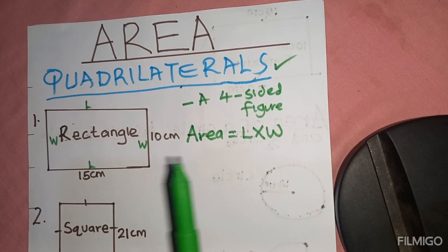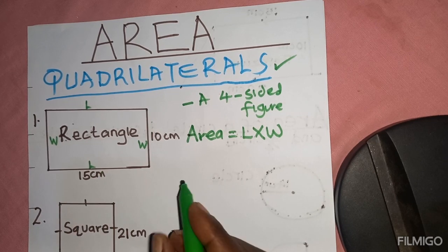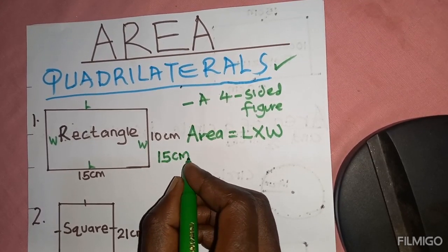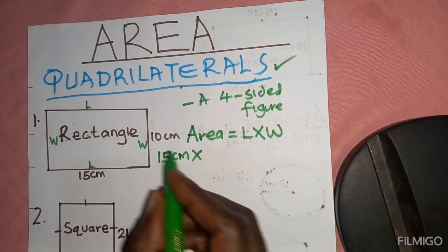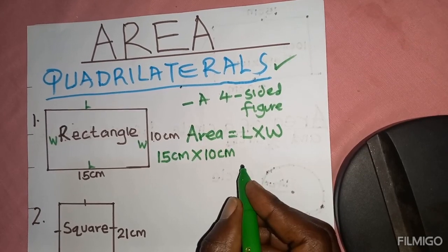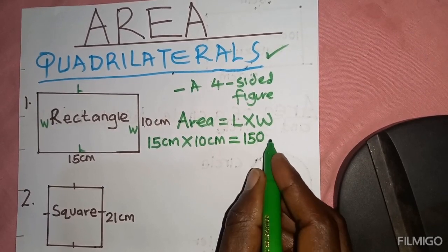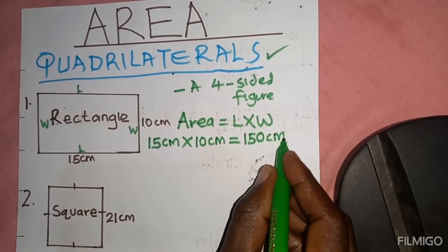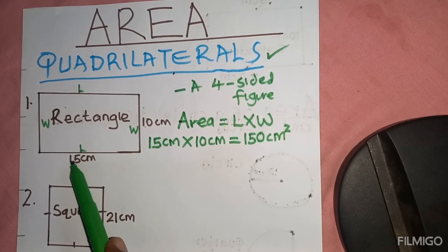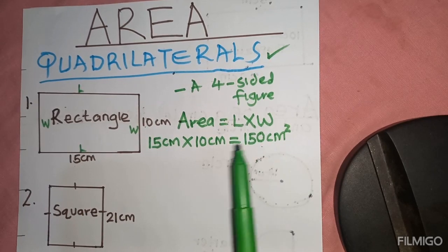Length is the longest side and the width is the shortest side. In our case, our length is 15 centimeters and our width is 10 centimeters. So the area is length times width — that is 15 times 10 — we get 150 square centimeters. And that is our answer.